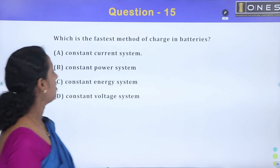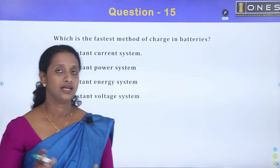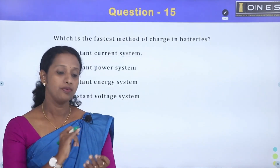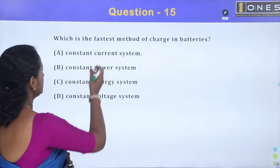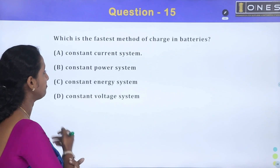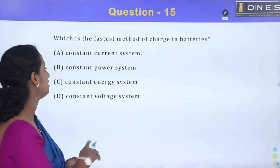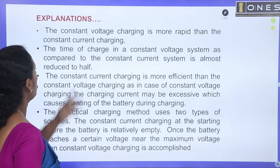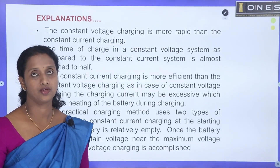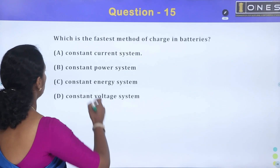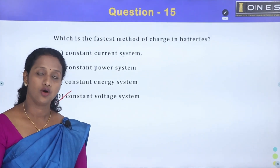Which is the fastest method of charging a battery? There are three charging methods: constant voltage, constant current, and float charging. Constant voltage charging is more rapid than constant current charging. So constant voltage charging is the fastest method.